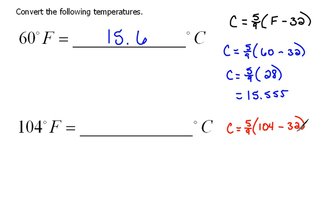And now we do parentheses first, always. So that means it's going to be 5 ninths times, excuse me, 104 minus 32 would be 72. And then taking 5 divided by 9 and multiplying by 72, we should get 40 degrees Celsius.